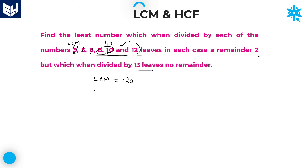As we want the remainder 2 in each case, the required number is equal to LCM plus remainder, which is equal to 122. Now check it out — 122 is not your exact answer because one more condition is given: that particular least number when divided by 13 should have no remainder. Check whether 122 is exactly divisible by 13. 122 is not divisible by 13.